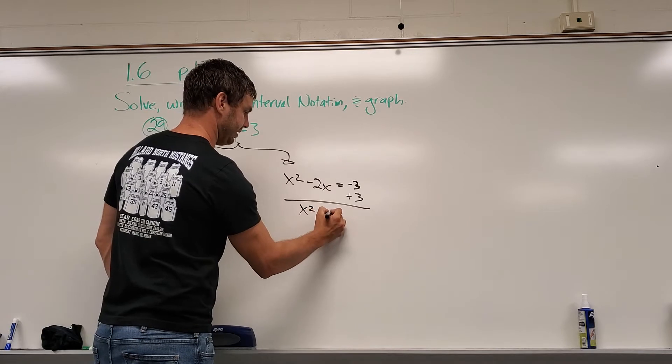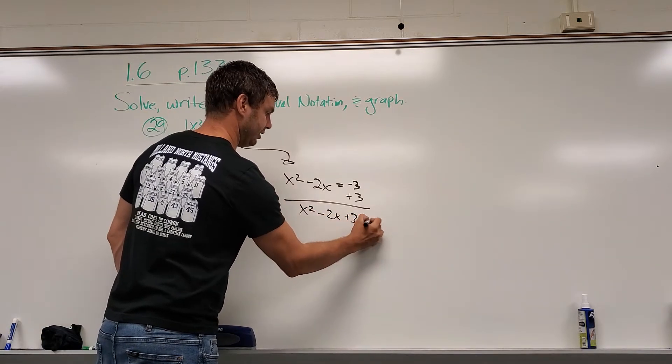On this one, we're going to get x squared minus 2x minus 3 equals 0. And on this one, x squared minus 2x plus 3 equals 0.